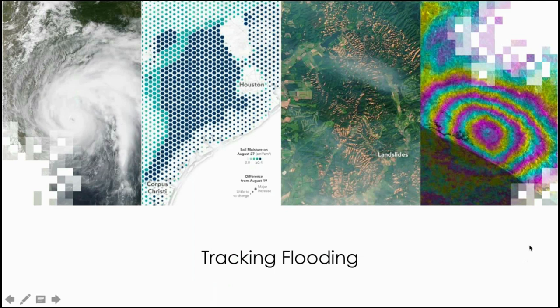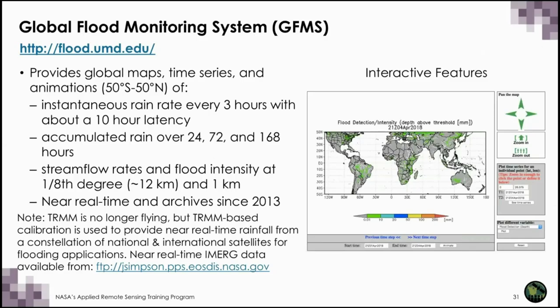In the next section, I'll discuss how we track flooding. The Global Flood Monitoring System, also known as GFMS, is a NASA-funded experimental system using real-time TRMM precipitation data as calibration and real-time GPM precipitation information input into a hydrological runoff and routing model running on a one-eighth degree latitude-longitude grid. The platform provides global maps, time series, and animations covering 50 degrees north to 50 degrees south latitudes, providing instantaneous rain rate every three hours with about a 10-hour latency.